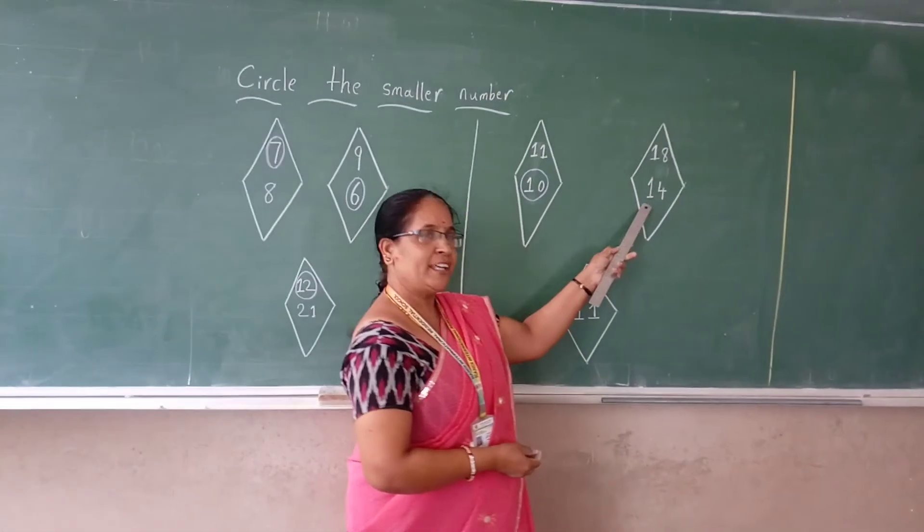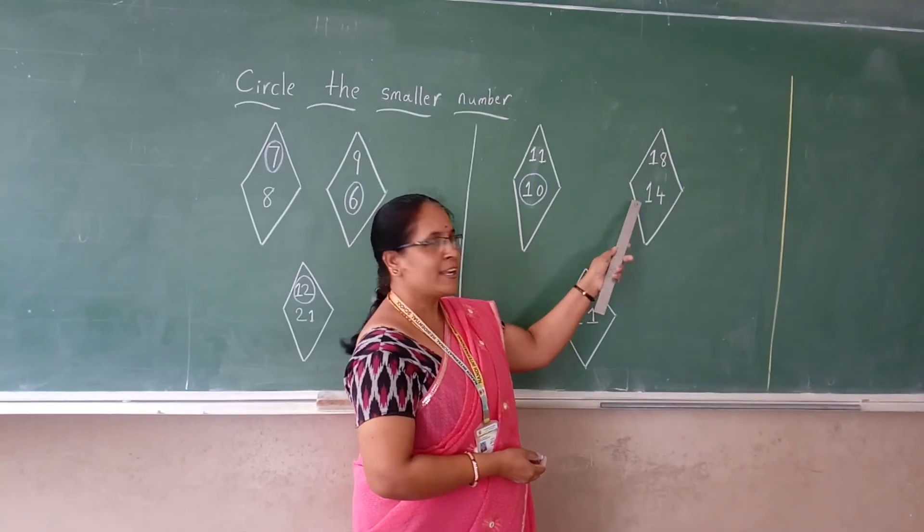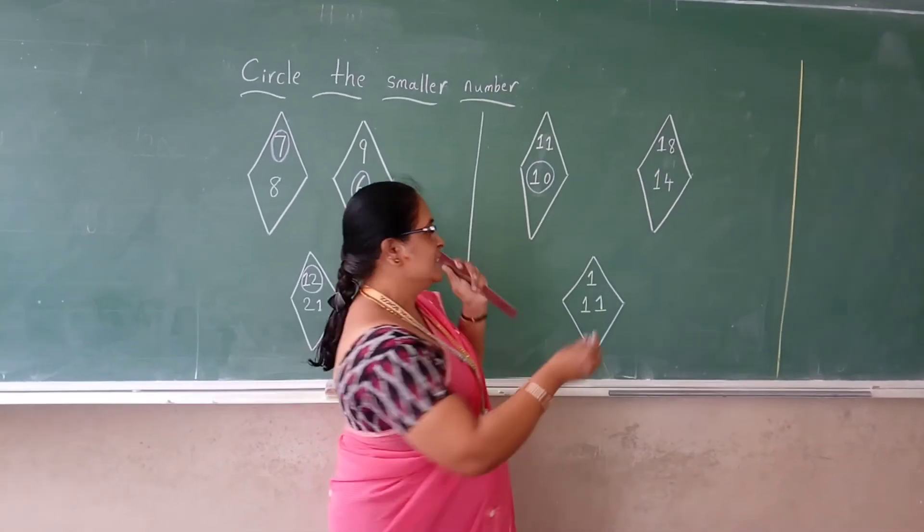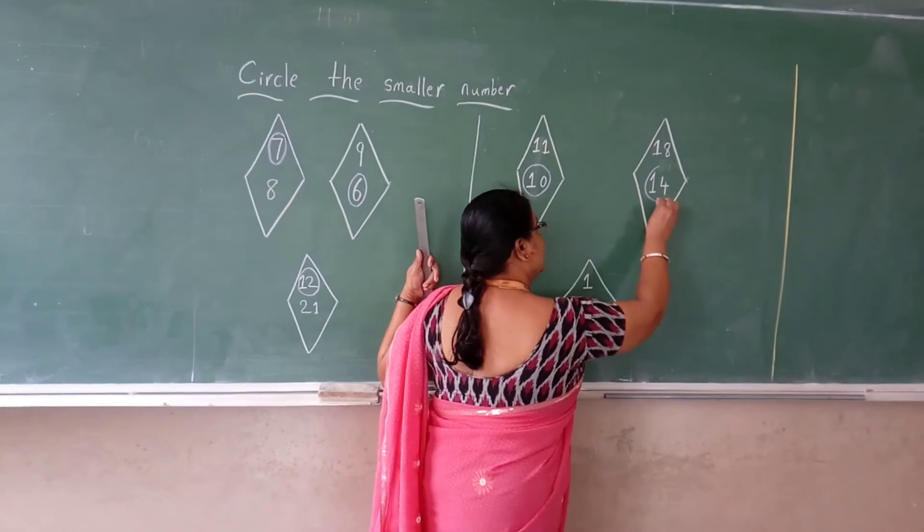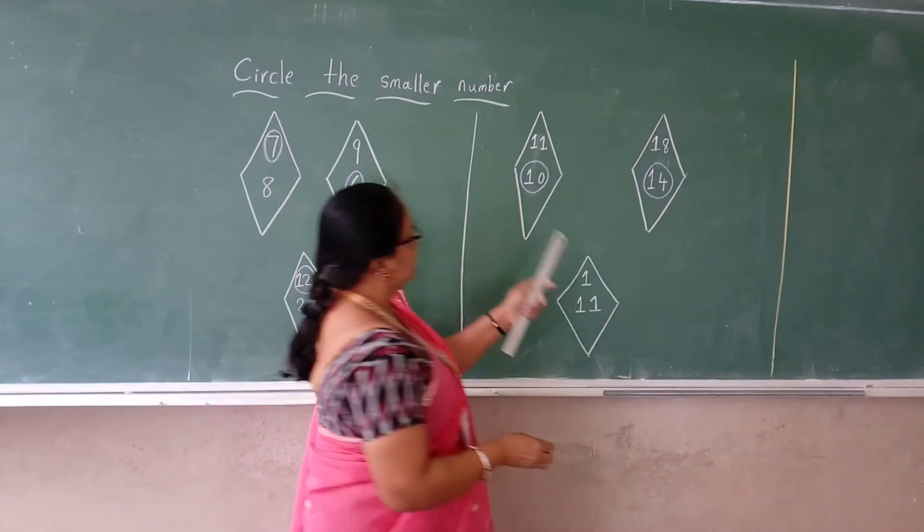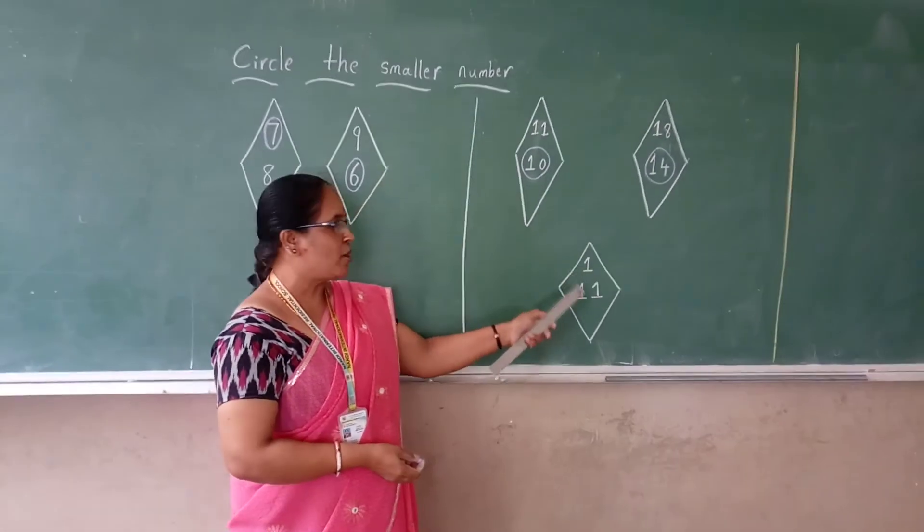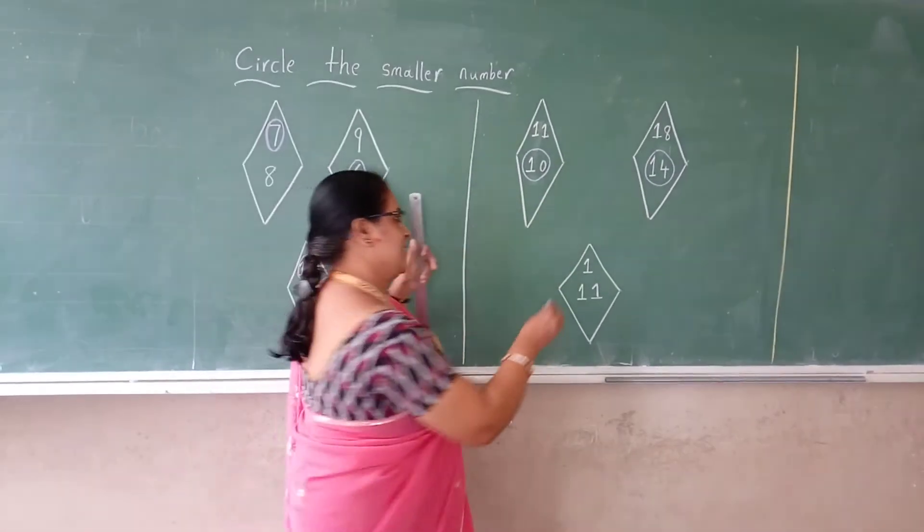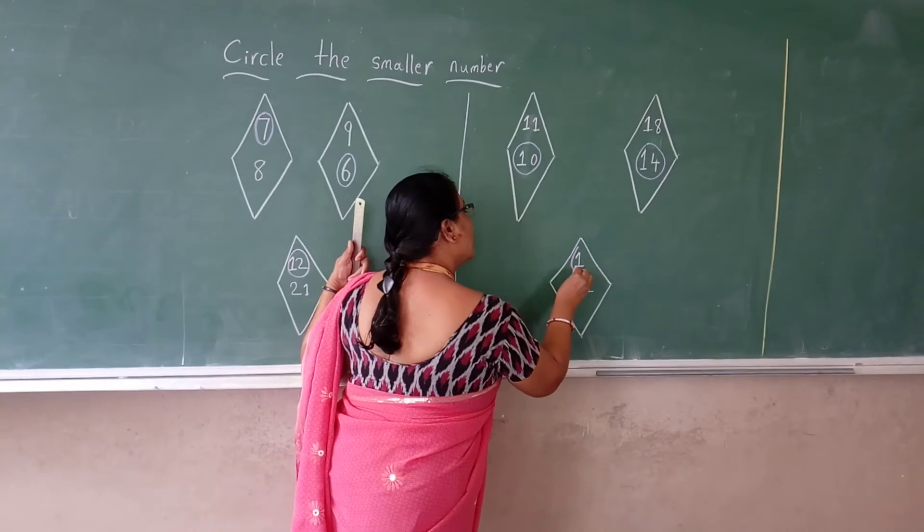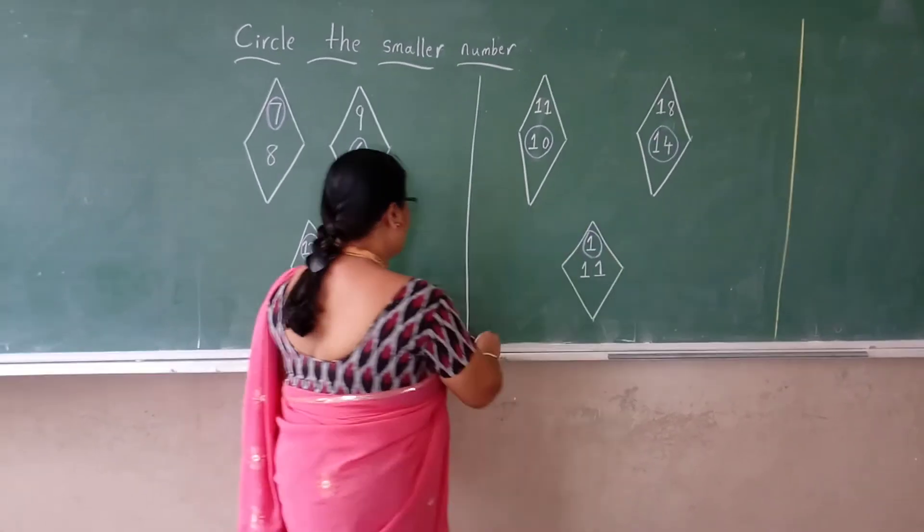Then 18 and 14 is given. Which one is the smaller number here? 14. Circle it. Then lastly, it is 1 and 11 is there. Which one is the smaller number? 1. Once again, shall we start now?